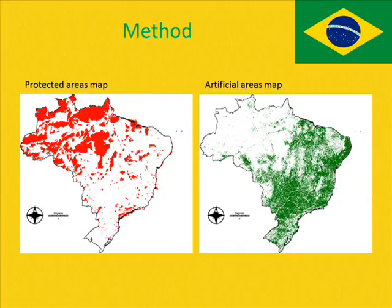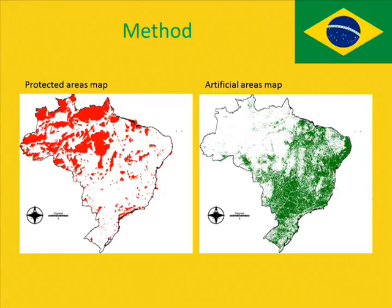Most of the protected areas are located in the north-western region of Brazil, with small protected areas in the central and coastal regions. The distribution of artificial areas was also analysed and processed. Most of the artificial land cover is concentrated inland moving offshore, with the least amount of urbanization in the north-western regions.